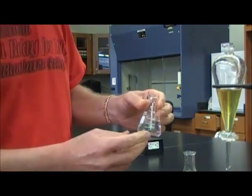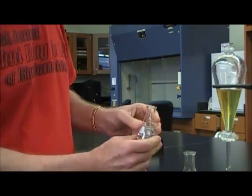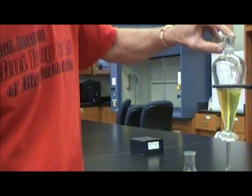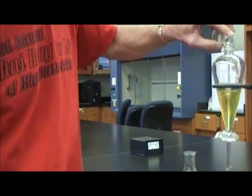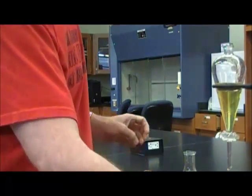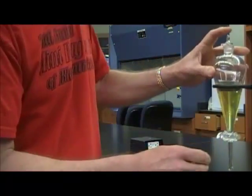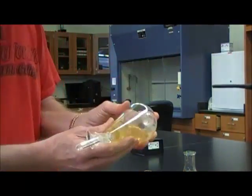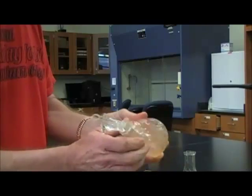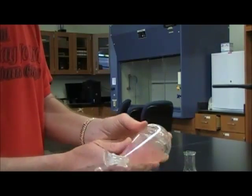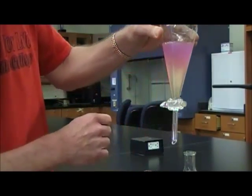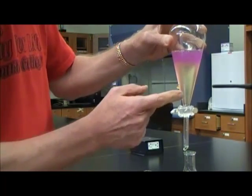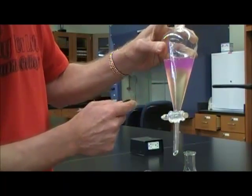So I'll take a fresh hexane sample, pour it into the separatory funnel, put the stopper back on, and again, make sure that the two layers are intimately mixed by shaking. And notice that I've extracted some more of the iodine out of the water layer into the hexane layer.